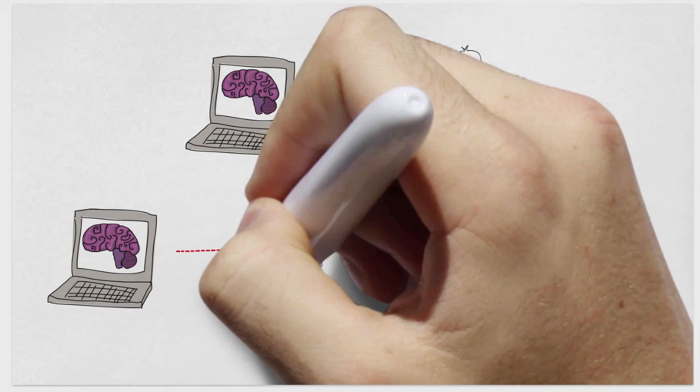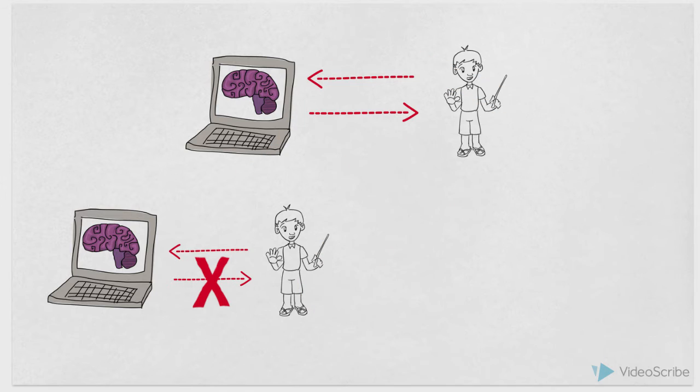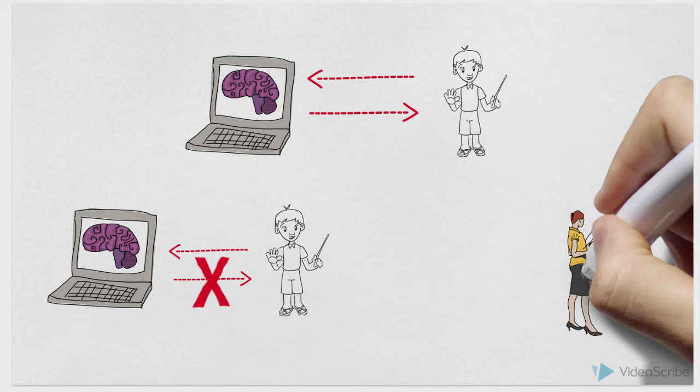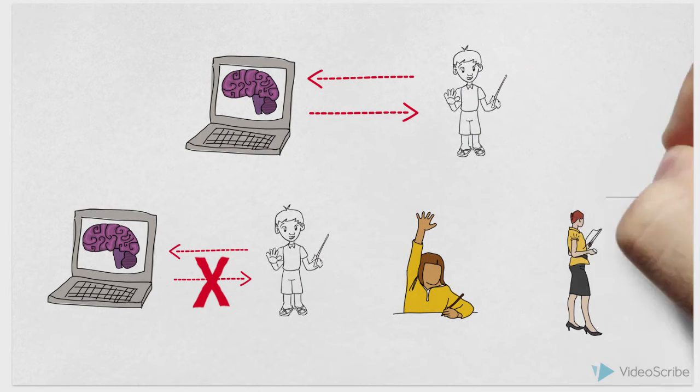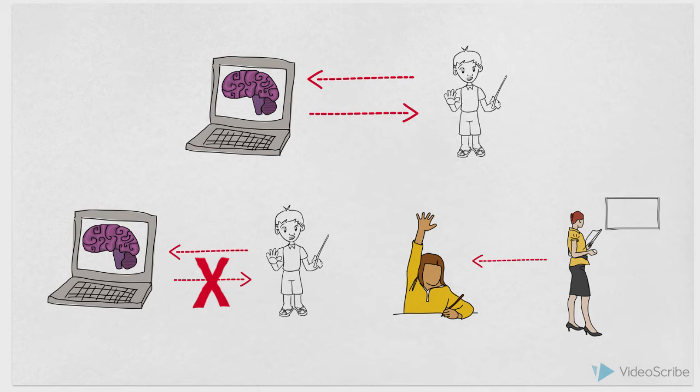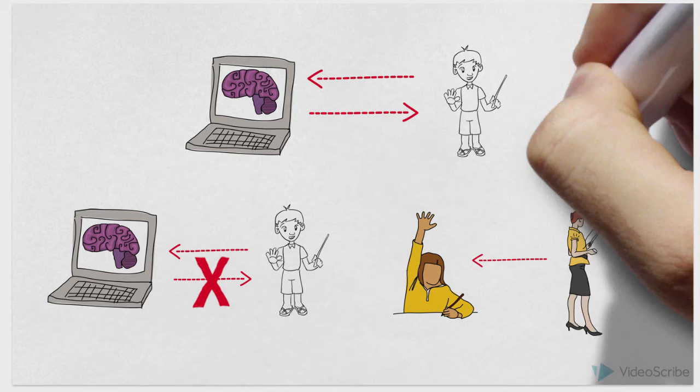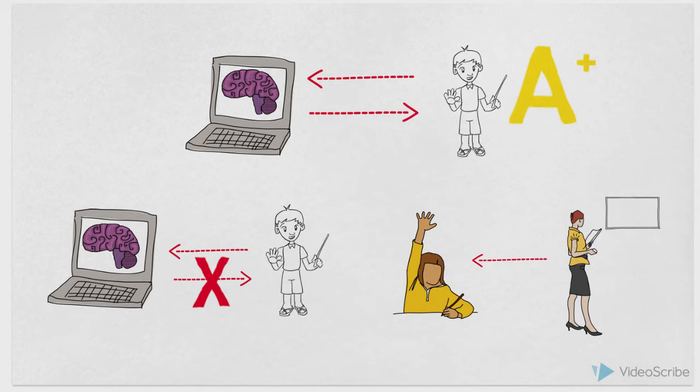Another group of students also taught Betty the information, but did not receive feedback from her. A final group, the control, did not teach any information, but was taught the content in a typical classroom setting. The researchers found that those who taught information, rather than passively learning it, scored higher when tested on the content. The students that taught also showed more enthusiasm and willingness to learn when they were asked to teach the subject.